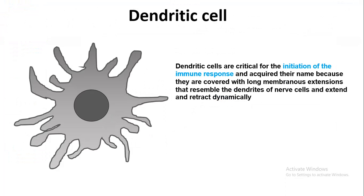In this video I will talk about dendritic cells. Dendritic cells are critical for initiation of the immune response. They are both part of innate immunity and they also work like a bridge between innate and adaptive immunity.